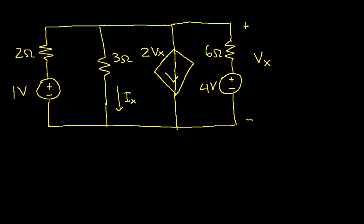When we're applying superposition, we will find the output Vx and Ix due to each of the independent sources by setting the other independent source to zero. So we would find Vx equal to Vx prime — the response due to the 1 volt source with the 4 volt source set to zero — plus Vx double prime, which is the response due to the 4 volt source with the 1 volt source set to zero.